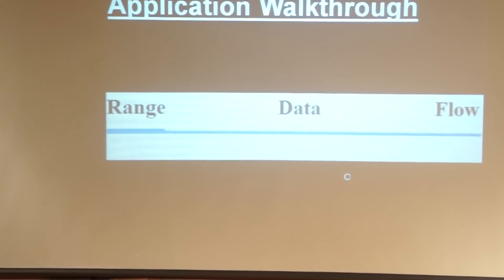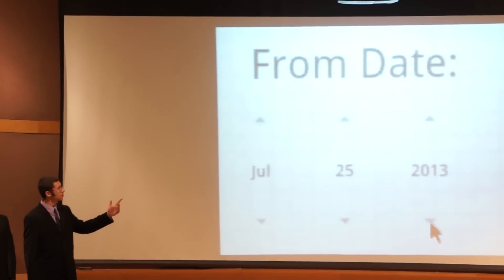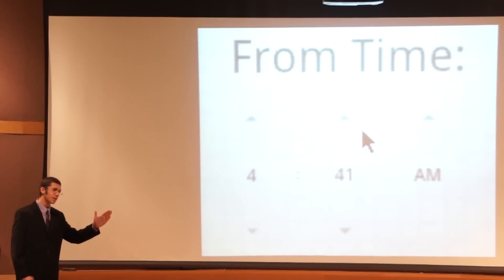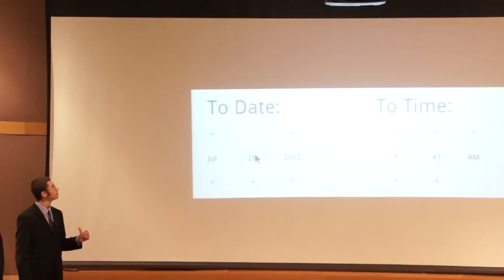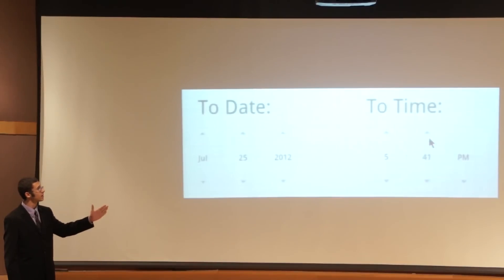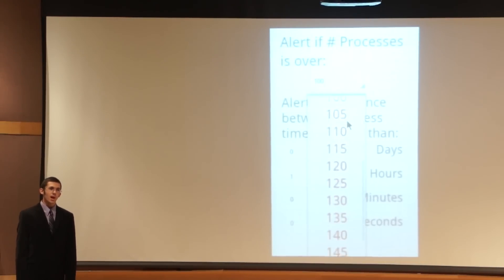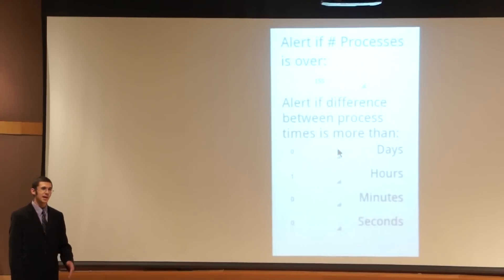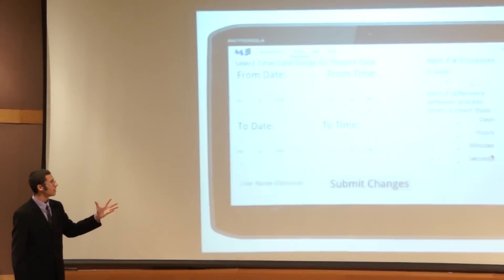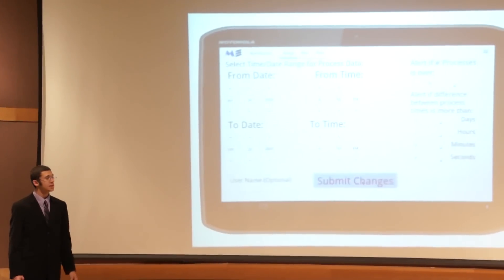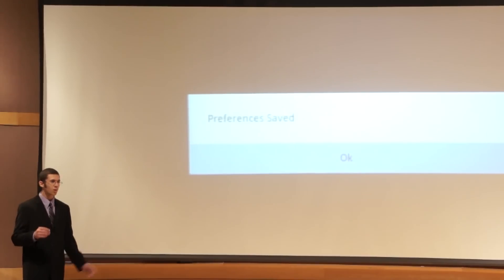This brings us to the screen the user sees when they first start the application. It's one of the most important, because this is where the user can set the date and time ranges to query the server. The default is to get all processes from the last hour, synced to the system clock. On the right side are drop-down menus where you can define how many processes is too many and what difference between process times is too much. A pop-up box appears when you click Submit Changes so the user knows their preferences have been saved.